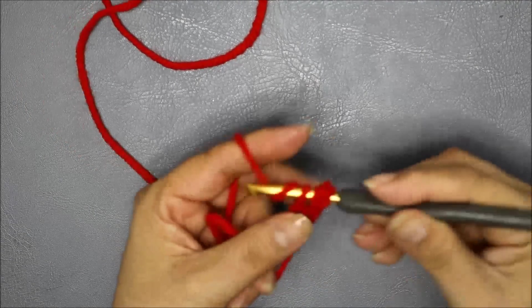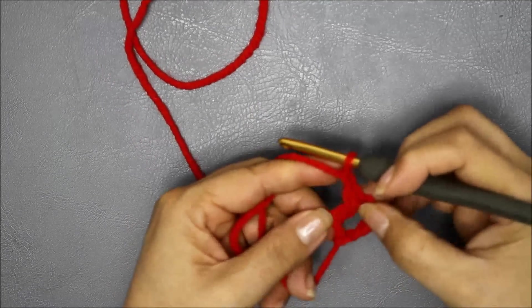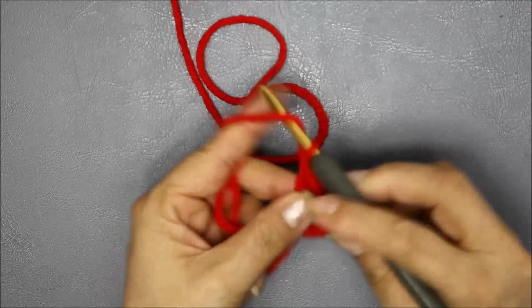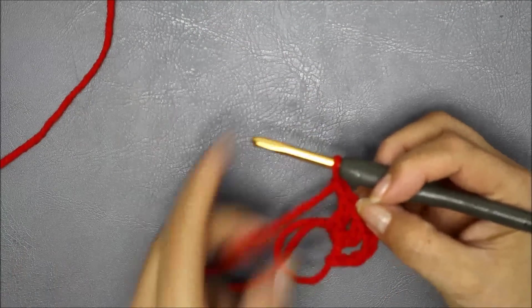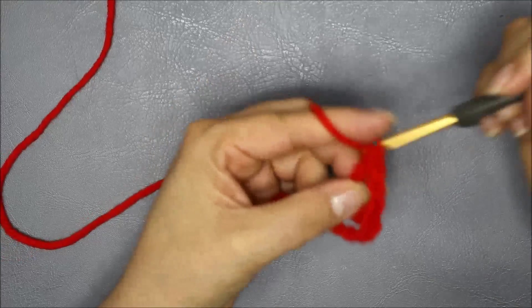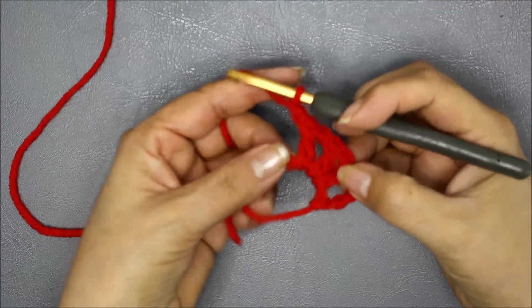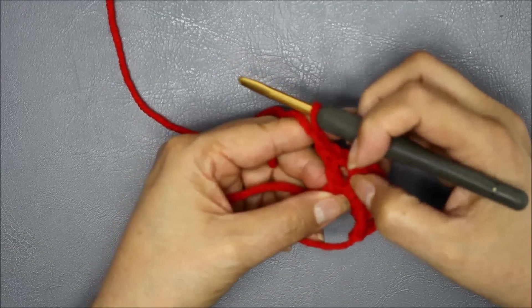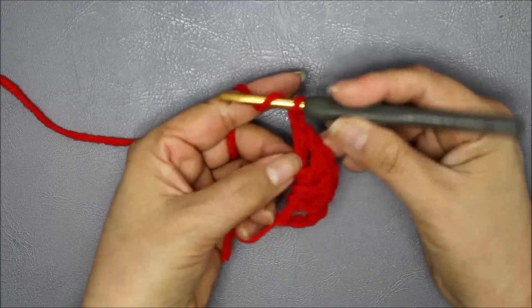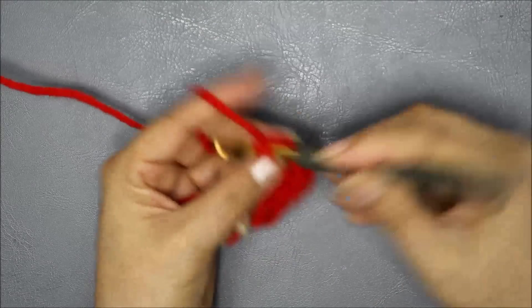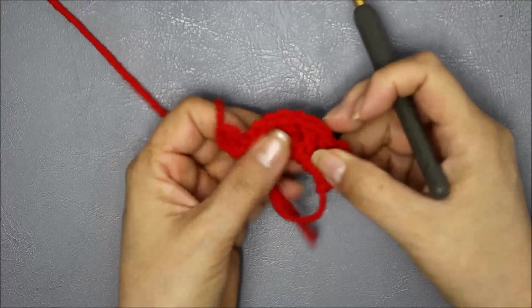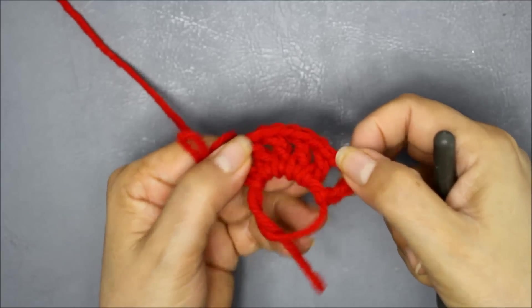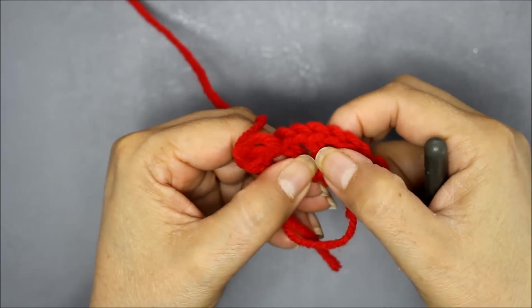So here double crochet, chain one. So here this is going to be one and two. Again, double crochet, chain one. I'm going to repeat that until I have all my six posts. This is going to be my last double crochet, and then chain one. Now you can count and you can see that I have six of these posts here. One, two, three, four, five, six.